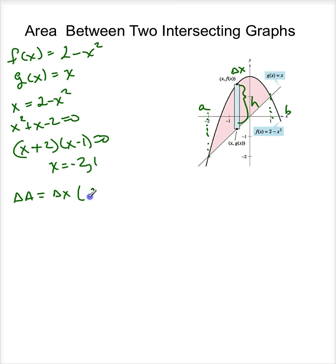And the height in this case is 2 minus x squared minus x. So the area is going to be what I get when I sum all of these up. So this becomes the integral from negative 2 to 1 of 2 minus x squared minus x dx.